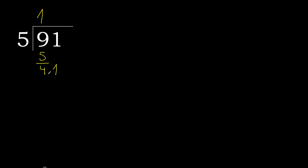Next, bring down the 1 — we have 41. 5 multiplied by 9 is 45, which is greater. 5 multiplied by 8 is 40, which is not greater. So 8 goes here. 41 minus 40 is 1.